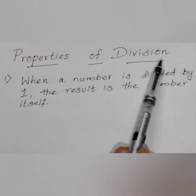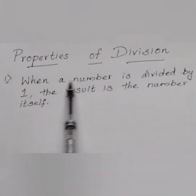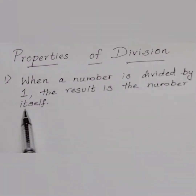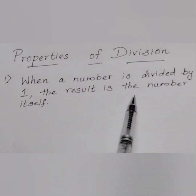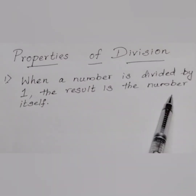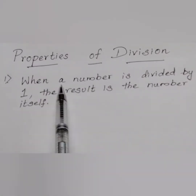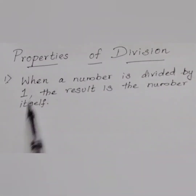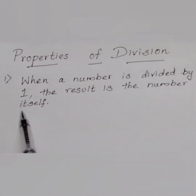Properties of division. When a number is divided by 1, the result is the number itself. Let me repeat: when a number is divided by 1, the result is the number itself.